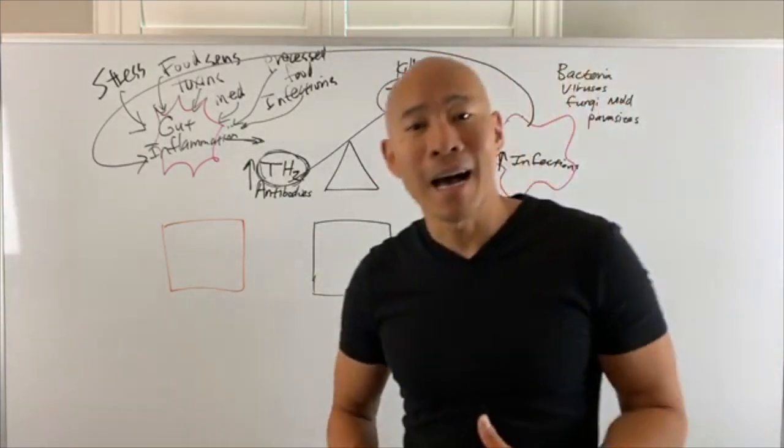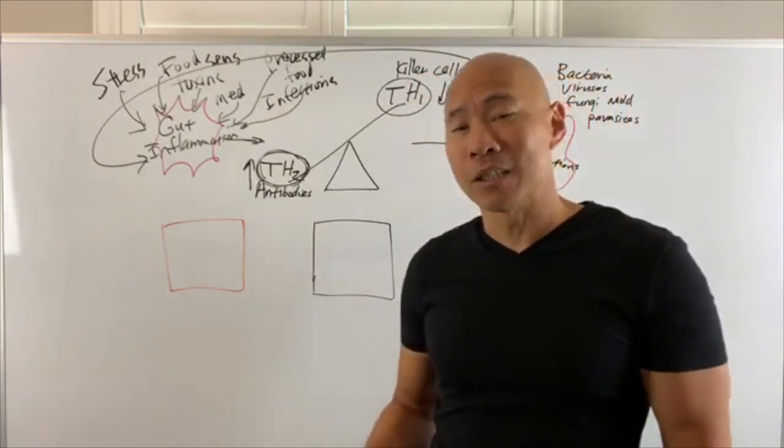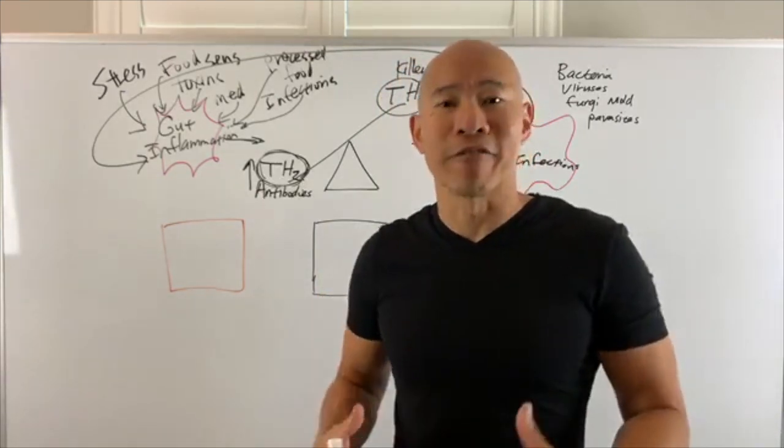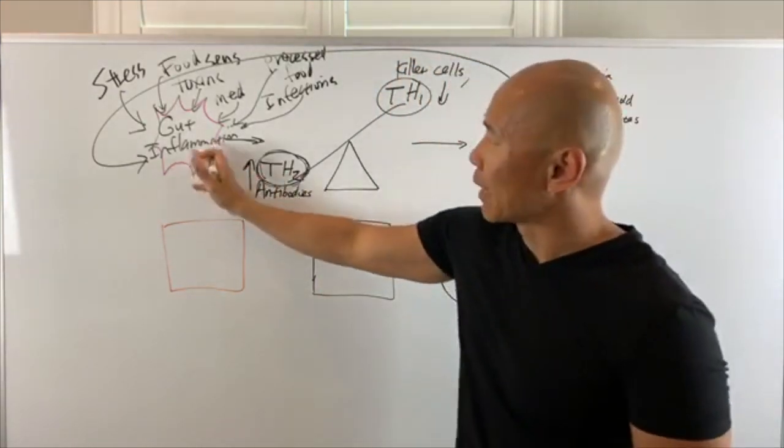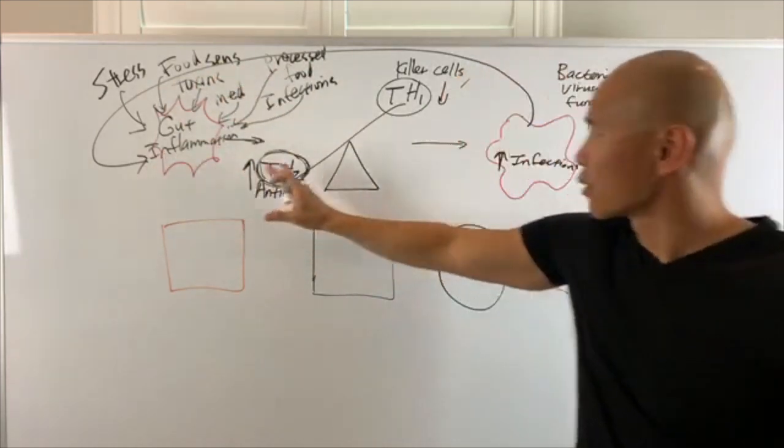So then you start to get UTIs, you start to get vaginitis, you start to get yeast infection, you start to get sinus infection, you get upper respiratory issue, and you get gut infection. So this gut inflammation from stress and food and medications and processed food triggers this immune imbalance.